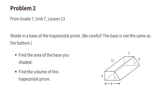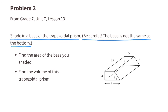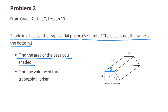Problem number two from 7th grade unit 7, lesson 13. Shade in the base of the trapezoidal prism — be careful, the base is not the same as the bottom. I shaded in two bases. Find the area of the base you shaded. Because of the shape of the base, I'll make a rectangle and a triangle.